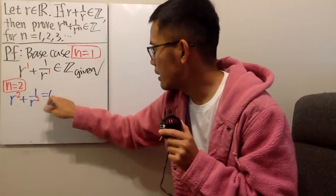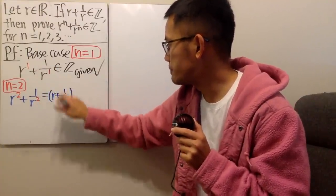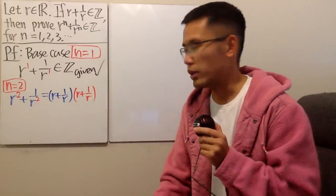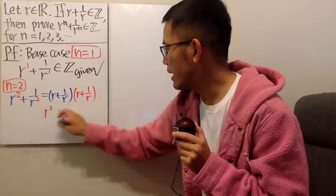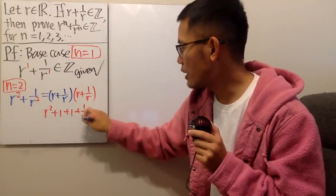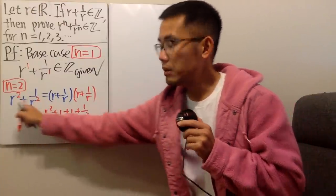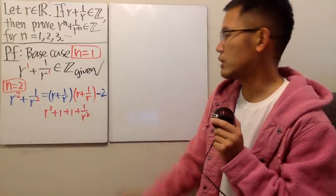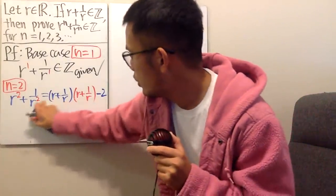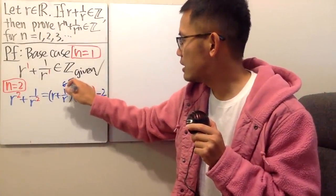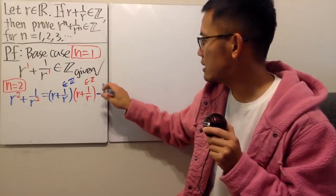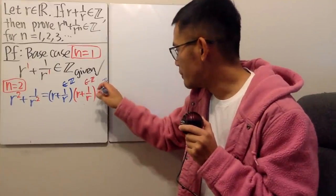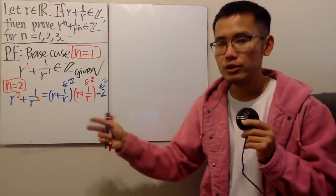Let's try another approach. I need to have r plus 1 over r, and let me multiply it by r plus 1 over r as well. Multiplying this out gives r squared, plus 1, plus 1, plus 1 over r squared. So r squared plus 1 over r squared does appear, but we have the extra 2. So of course we just subtract 2 after that. Now this is better: r plus 1 over r is an integer, this is an integer, and 2 is also an integer. Integer times integer minus integer is still an integer. Good.